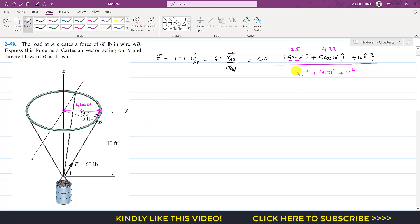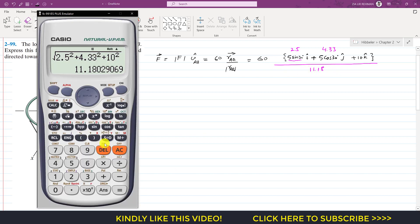This magnitude is 11.18. If I divide 60 by 11.18, this gives me 5.37.